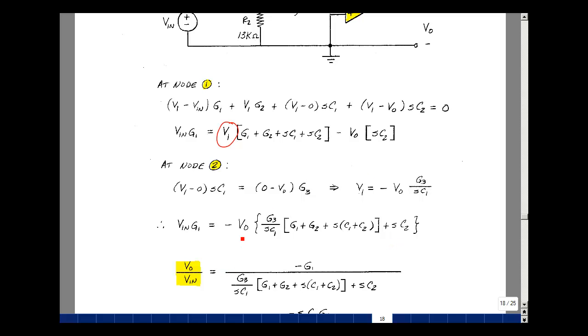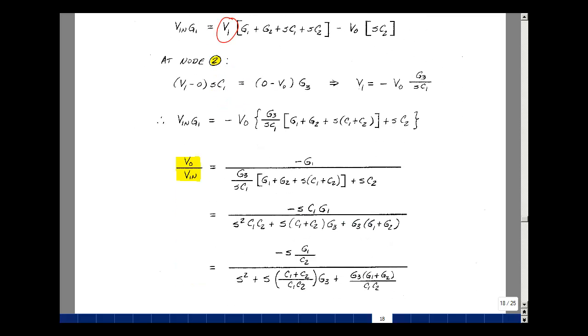I can solve for Vout over Vin. Vout is here, I'm going to bring Vin here. I'm going to take the reciprocal of this, I'll put it in the denominator, and the numerator I've got G1 and then a minus sign. Let's multiply the numerator and denominator by SC1. So I get a minus SC1 G1.